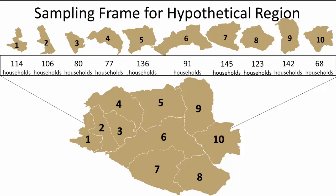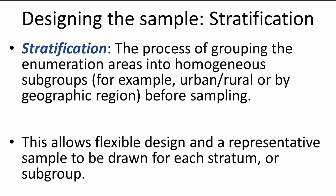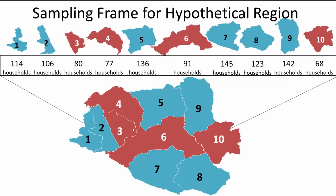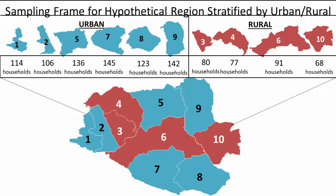The goal of a sampling frame is to identify 100% of the target population so that every individual has a chance to be selected and interviewed. After constructing the sampling frame, the next step is grouping the units into homogeneous subgroups called strata — a process called stratification — which allows a representative sample to be drawn for each stratum. Using our example region, we take the list of all clusters and stratify them into urban and rural. Blue represents urban clusters and red represents rural clusters. We have six urban clusters and four rural clusters in our example region.